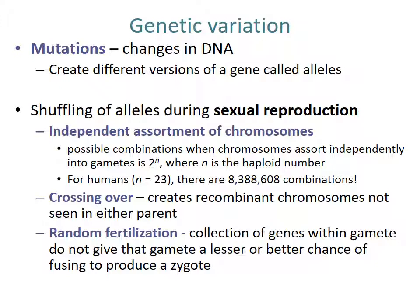Sexual reproduction encourages genetic variation, but mutation is the ultimate source of genetic variation — it's just a change in a DNA sequence. Different versions of a gene are called alleles. During sexual reproduction, existing mutations or alleles are shuffled around through independent assortment of chromosomes in metaphase 1 of meiosis 1. Mathematically, the possible combinations are 2 to the nth power. For humans, with 23 pairs of chromosomes, n equals 23, so 2 to the 23rd power equals 8,388,608 combinations — a ton of combinations, just from how your chromosomes could assort in producing a single sperm or egg.